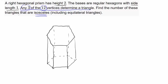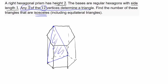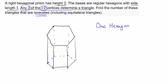There are 2 types of isosceles triangles we can have. There are isosceles triangles that are entirely contained within the top hexagon or the bottom hexagon. And there are isosceles triangles that stretch from the top hexagon to the bottom hexagon. So we have 2 different types of isosceles triangles to work with.